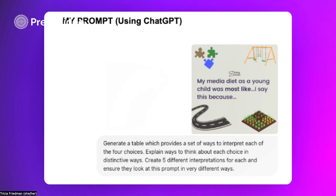So I let them know I was using ChatGPT. I had uploaded the image and you can see my prompt there that says: generate a table which provides a set of ways to interpret each of the four choices, explain ways to think about each choice in distinctive ways, create five different interpretations for each, and ensure they look at this prompt in very different ways.